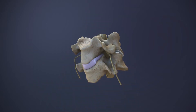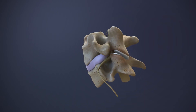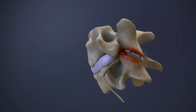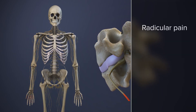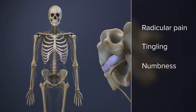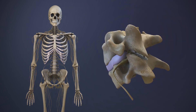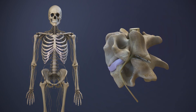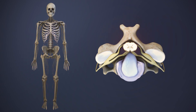Spinal conditions including disc herniation or facet joint osteoarthritis may irritate one or more of these spinal nerves and cause radicular pain, tingling, numbness, and weakness along the path of the nerve. If the spinal cord is compressed, it may cause pain and neurological deficits in the arms, legs, or anywhere below the level of compression.